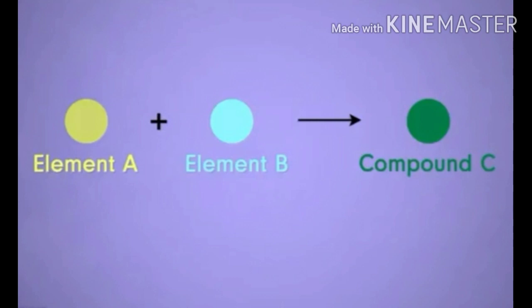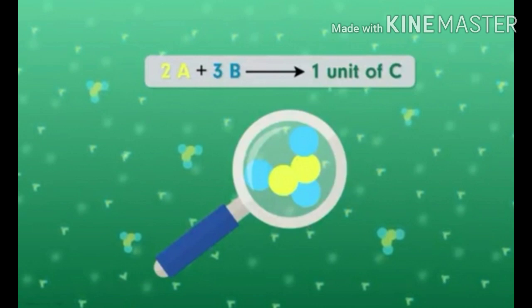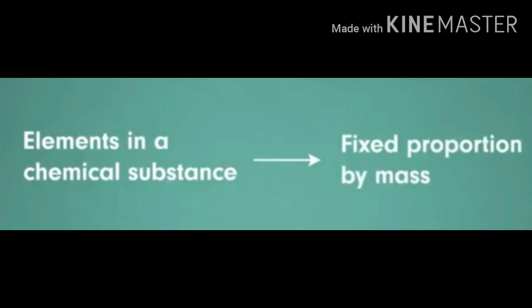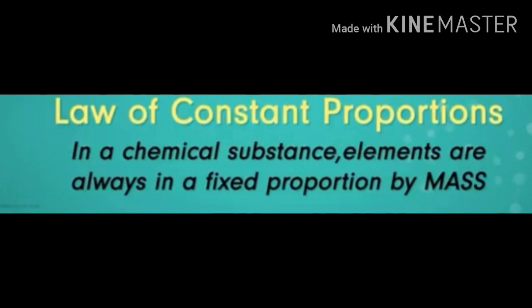Here we will magnify compound C and we will see that two atoms of element A and three atoms of element B form one unit of compound C. If one atom from any one element A or element B is taken away, then we will not get element C. We can say that elements in a chemical substance have fixed proportions by mass.